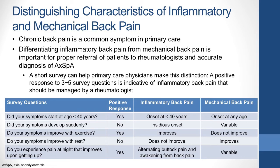A short five-question survey can be used by primary care physicians to help differentiate inflammatory from mechanical back pain. The first question to ask a patient reporting back pain is: Did your symptoms start at less than 40 years of age? Patients with inflammatory back pain will typically indicate symptoms started before age 40, while patients with mechanical back pain may experience new onset at any age. The second question is: Did your symptoms develop suddenly? Patients with inflammatory back pain tend to have symptoms with an insidious onset, whereas mechanical back pain can develop suddenly or progressively over time.